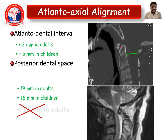The lateral atlanto-axial alignment would be less than 3 mm in adults and less than 5 mm in children. The posterior dental space would be around 19 mm in adults and 16 mm in children.